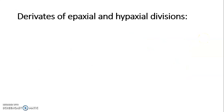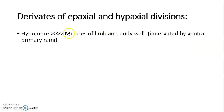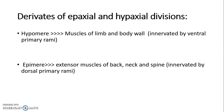The hypaxial division, hypomere, gives rise to muscles of the limb and body wall, which are innervated by ventral primary rami. The epaxial division, epimere, gives rise to extensor muscles of the back, neck, and spine, which are innervated by dorsal primary rami.